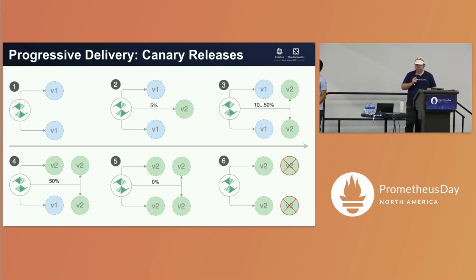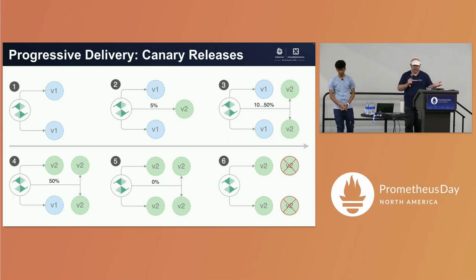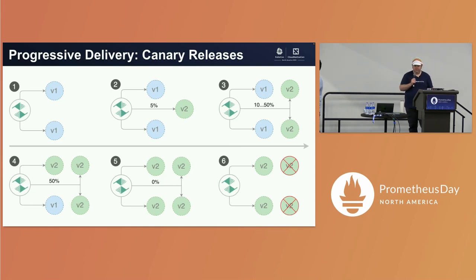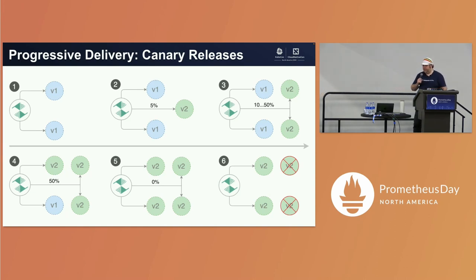In panel one, we have version one running with two replicas and Flagger is monitoring. In panel two, we've added a pod for version two and started routing some traffic to it. Meanwhile, Flagger is monitoring the metrics to see that everything's going okay. As it seems fine, we incrementally add traffic to the canary version two — we go from 10% up to 50%. Once we get to 50% and our metrics still look fine, we're reasonably confident the release is good.